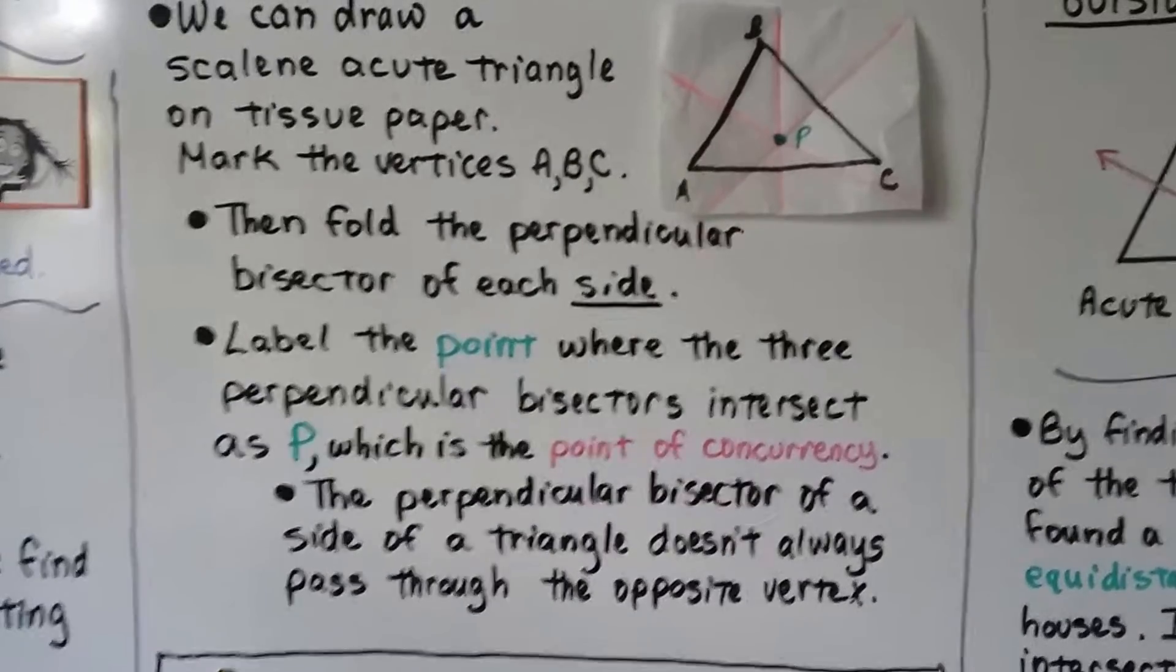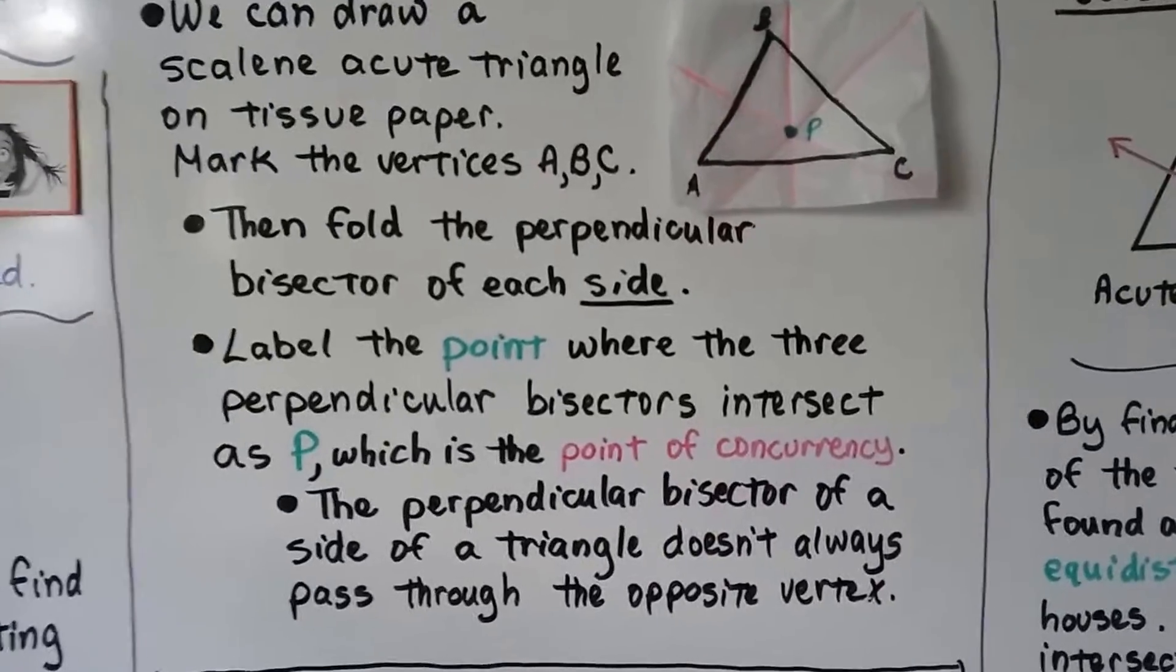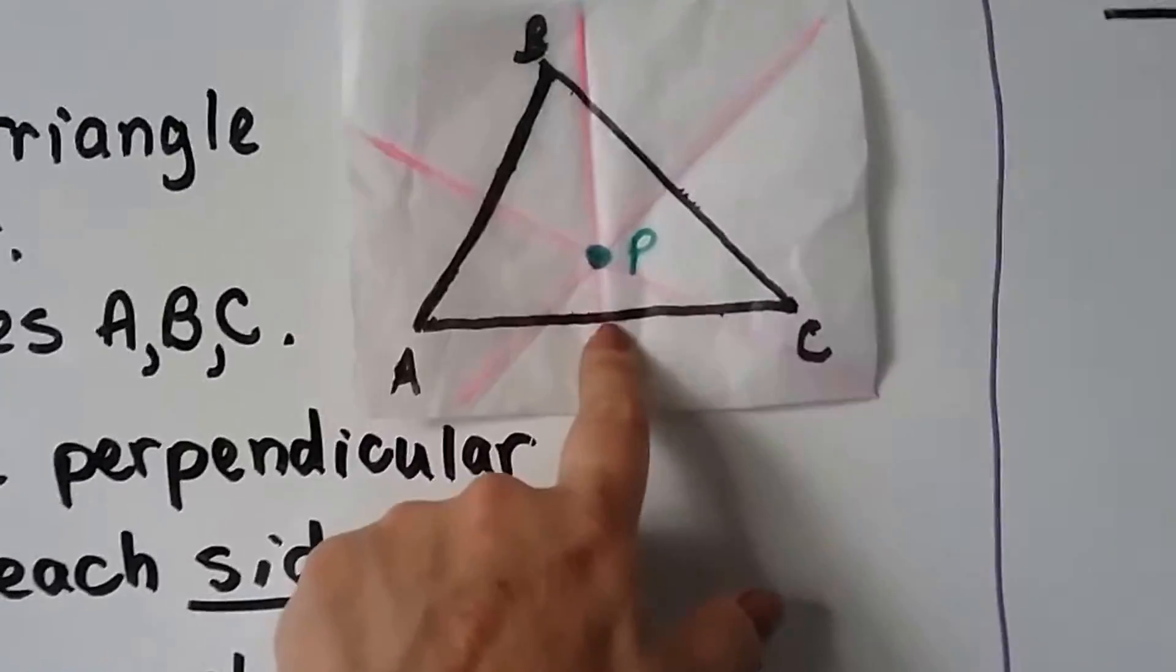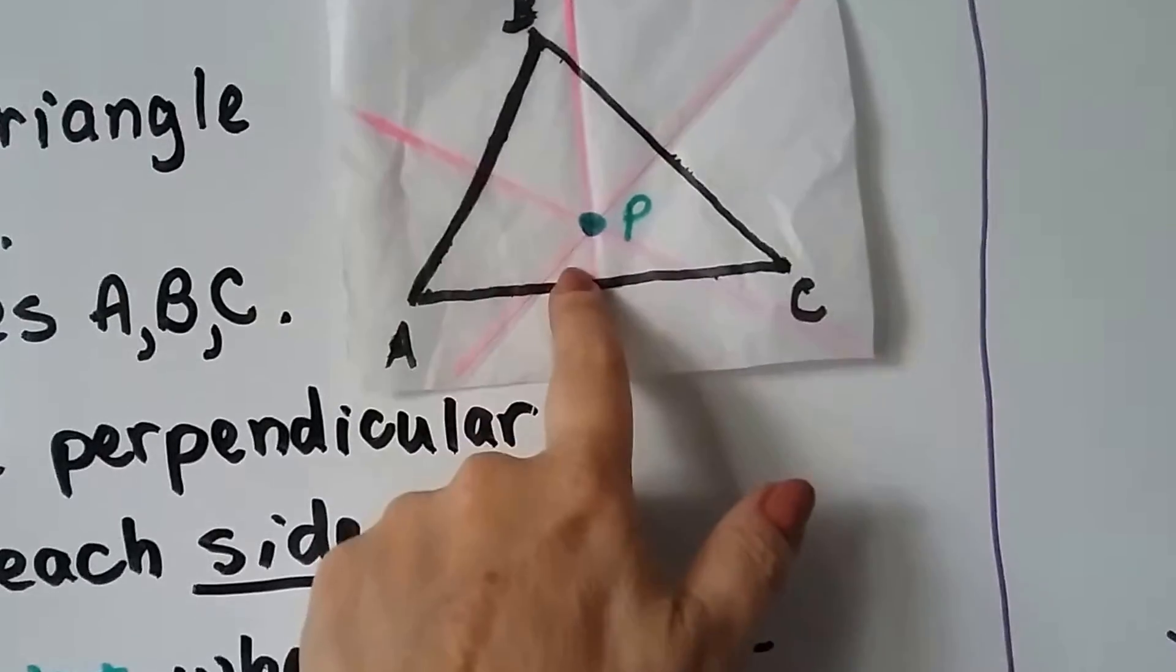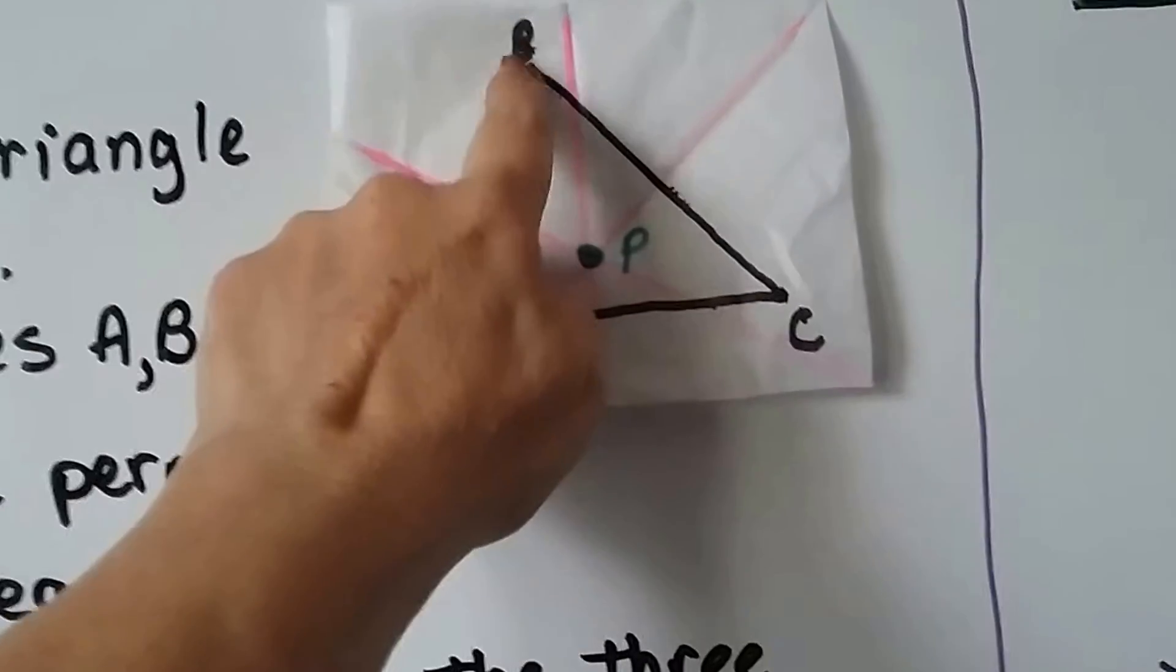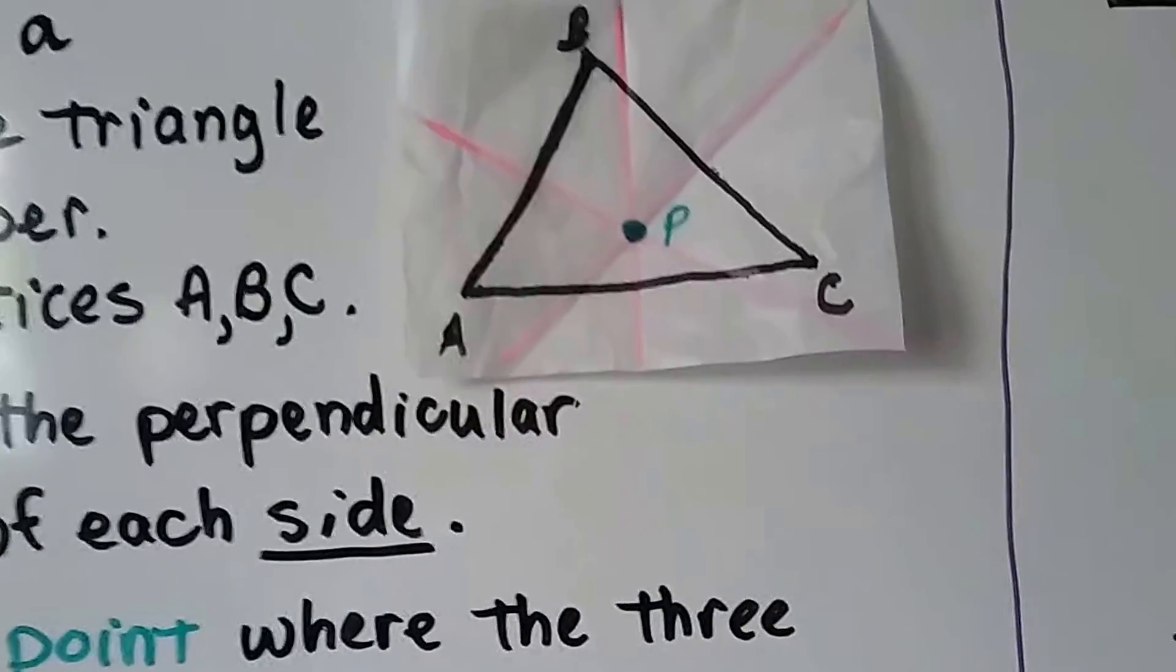The perpendicular bisector of a side of a triangle doesn't always pass through the opposite vertex. If you look through this, this is the perpendicular bisector of AC. It's going straight up to make a right angle and a right angle, but it doesn't go through B because this is a scalene acute triangle.